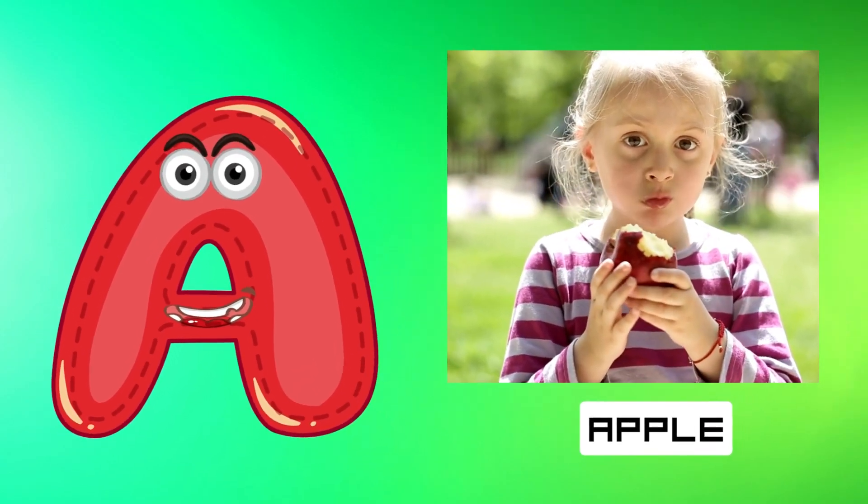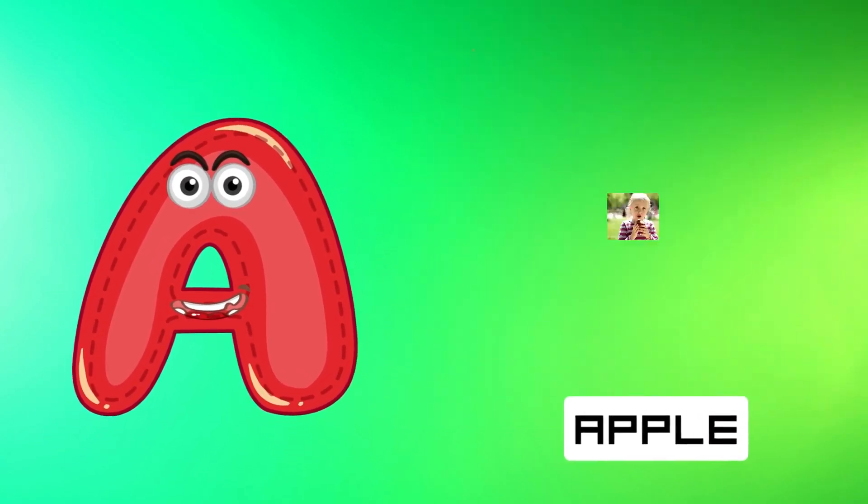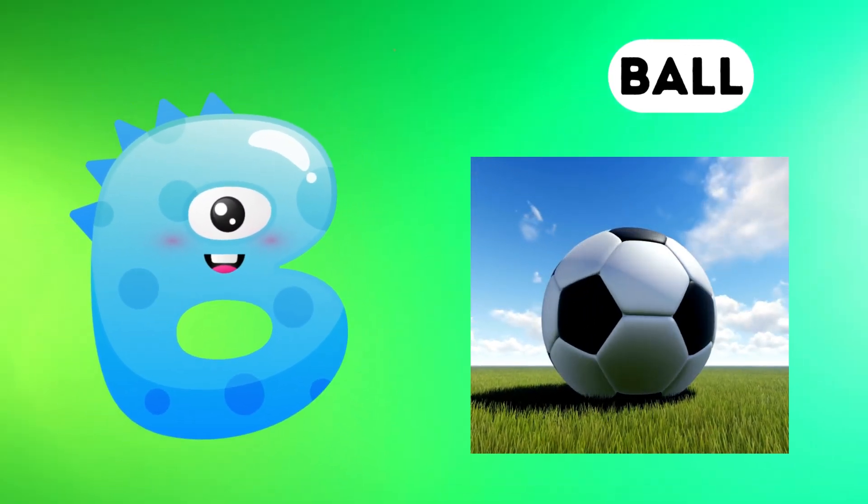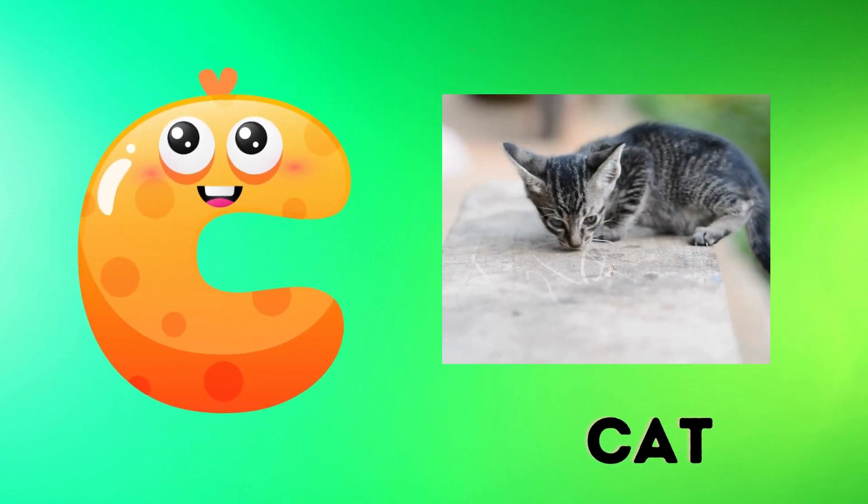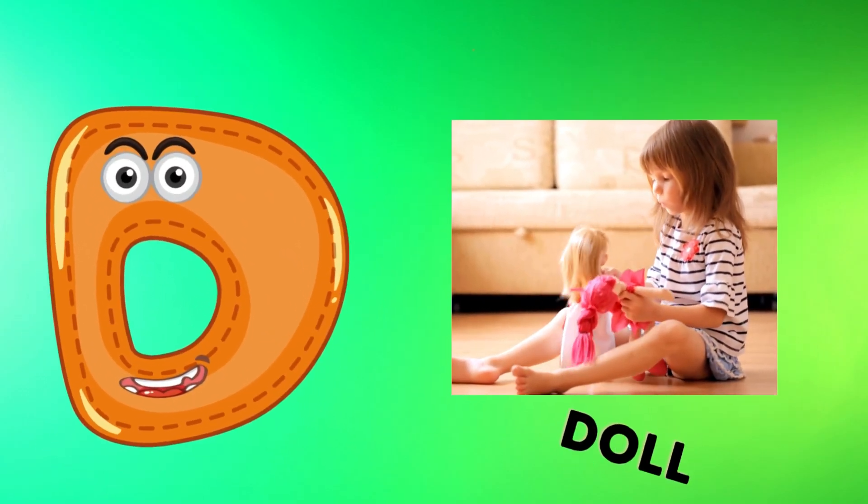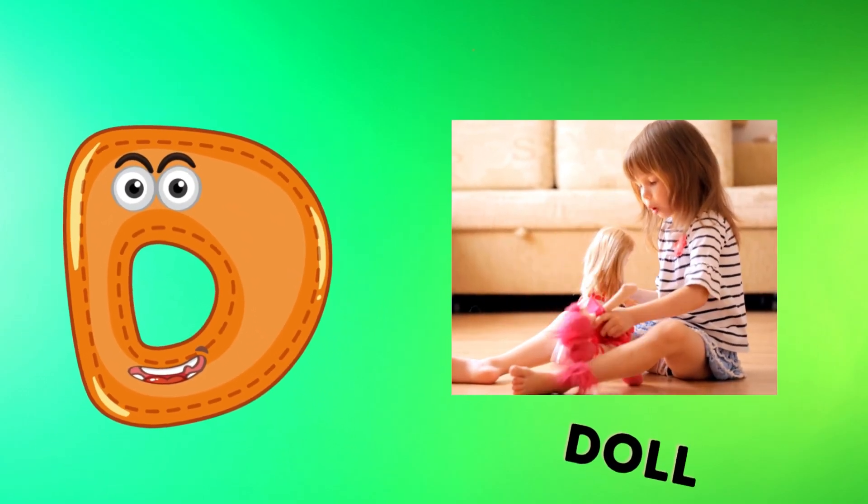A is for apple, a-a-apple. B is for ball, b-b-ball. C is for cat, c-c-cat. D is for doll, d-d-doll.